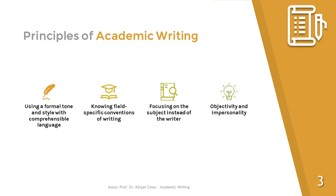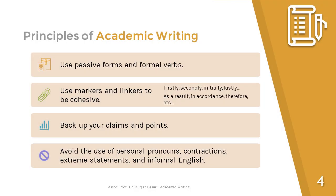Academic writing uses an objective, impersonal style structured with formal vocabulary. While writing an academic work, utilize passive forms and formal verbs if possible. Remember to be coherent and cohesive with the use of markers like firstly, secondly, initially, lastly and linkers like as a result, in accordance, therefore, etc.